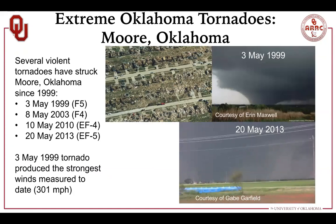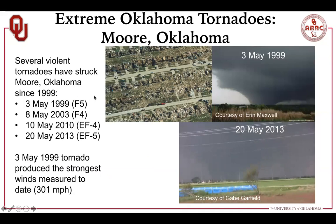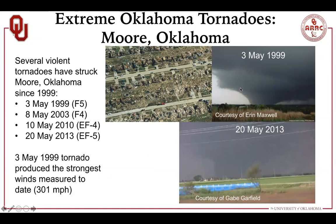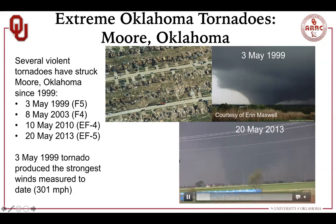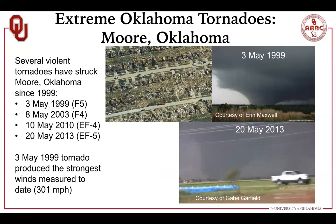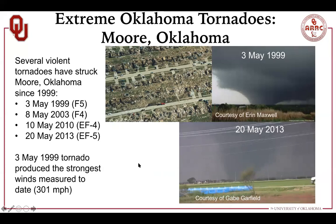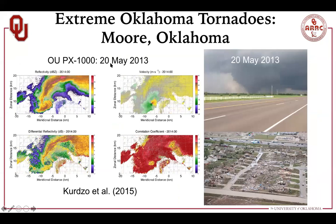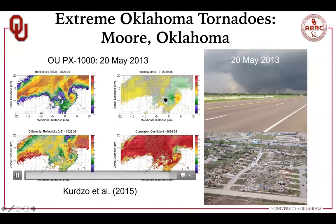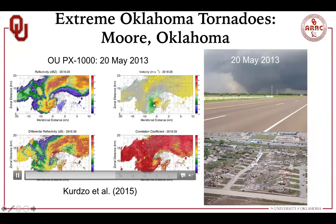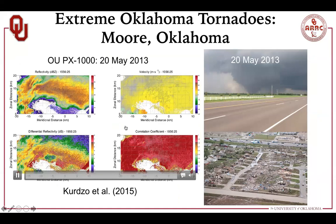Oklahoma is certainly no stranger to severe weather — it has been struck four times by different violent tornadoes since 1999. The May 3rd 1999 tornado is one of the most famous, producing the strongest winds on record from a Doppler radar at 301 miles an hour. This is data we collected during the EF-5 May 20th tornado from the OUPX1000 radar — showing reflectivity, which indicates precipitation intensity, and Doppler velocity data where the bright blue and red colors close together indicate the tornado's location.